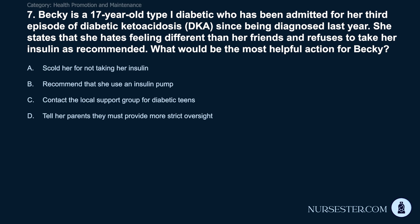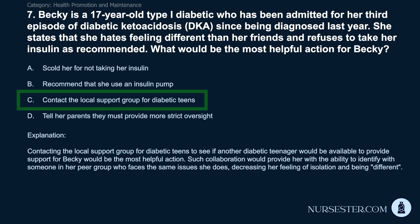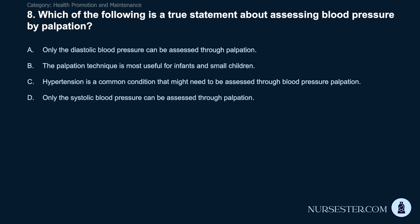Question 7: Becky is a 17-year-old type 1 diabetic admitted for her third episode of diabetic ketoacidosis since being diagnosed last year. She states she hates feeling different than her friends and refuses to take her insulin as recommended. What would be the most helpful action? A) Scold her for not taking her insulin. B) Recommend an insulin pump. C) Contact the local support group for diabetic teens. D) Tell her parents they must provide more strict oversight. Correct answer: C. Contact the local support group for diabetic teens. Such collaboration provides her the ability to identify with a peer who faces the same issues, decreasing her feeling of isolation and being different.